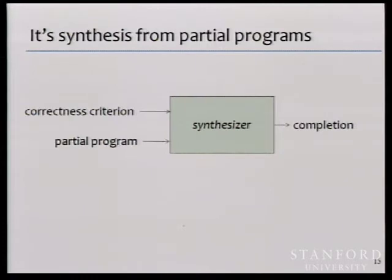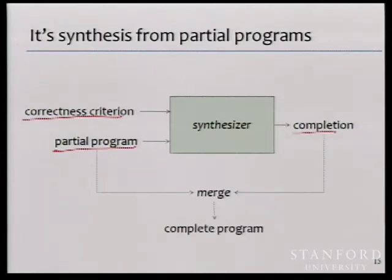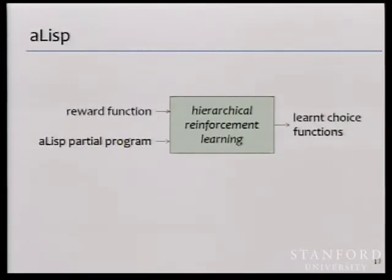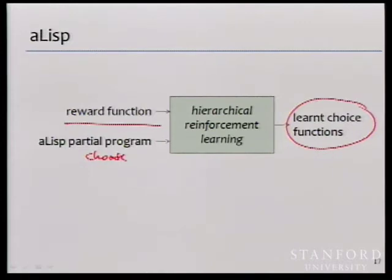Both ALISP and Sketch are about synthesizing programs from partial programs. The synthesizer receives a partial program and a correctness criterion, obtains a completion, and merges them into the complete program. In Sketch, the partial program is the sketch, the correctness criterion is the reference implementation, and hole values give the final program. In ALISP, the partial program has 'choose' placeholders, the correctness criterion is a reward function, and the completion is the learned choice functions.